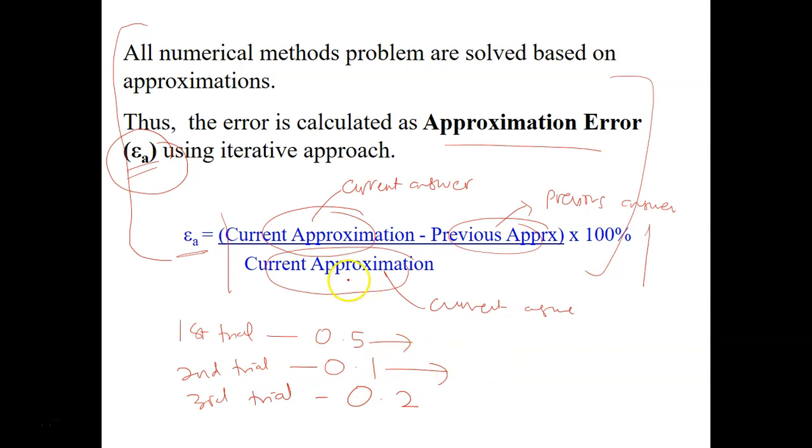So in here for the second answer, you just use current approximation, which is 0.1, minus previous approximation, minus 0.5, divided by current approximation, which is 0.1, times 100%. So you'll get your answer. And solving this, you will get 400%.